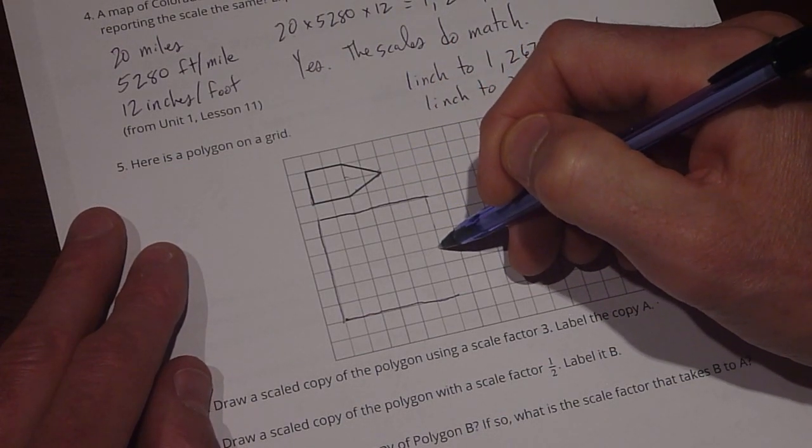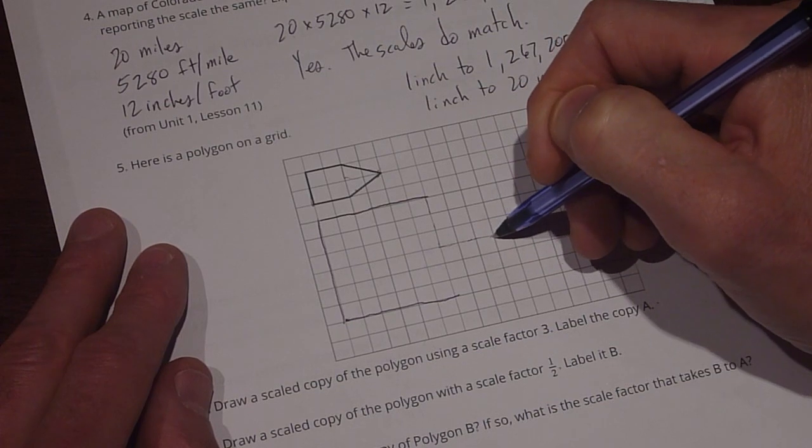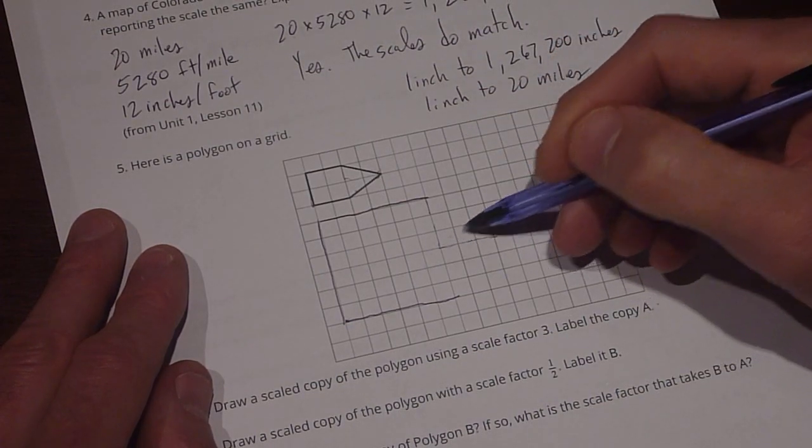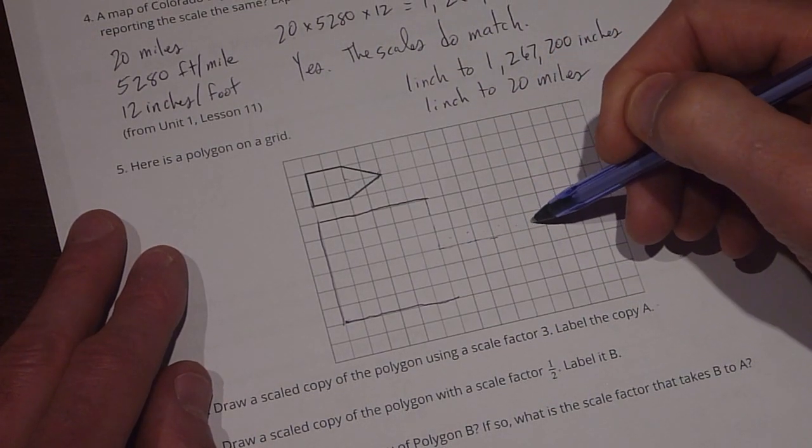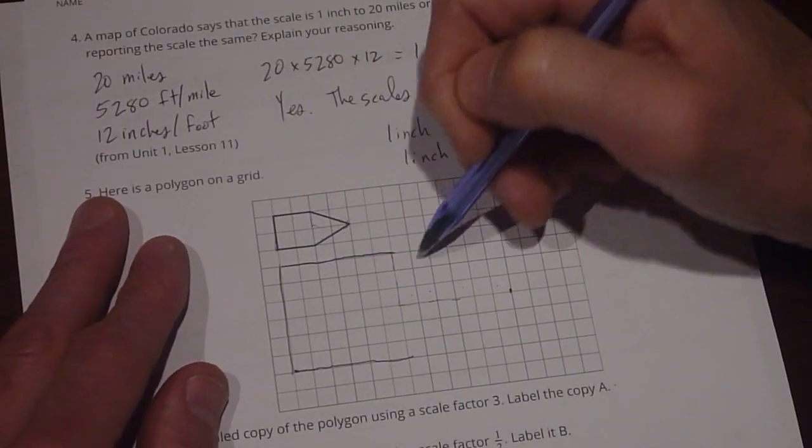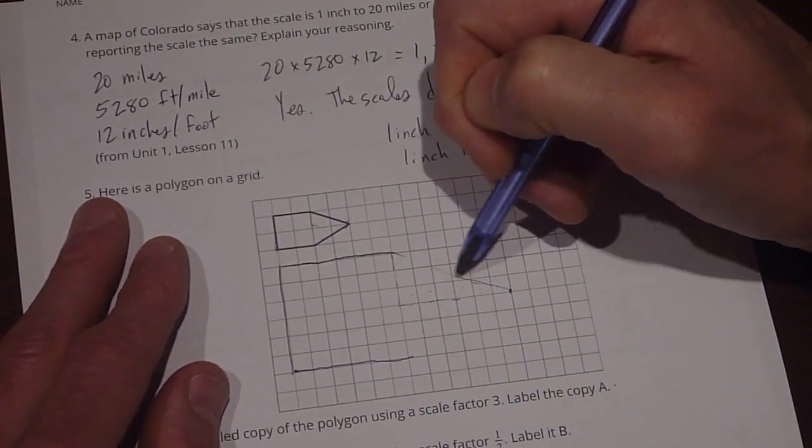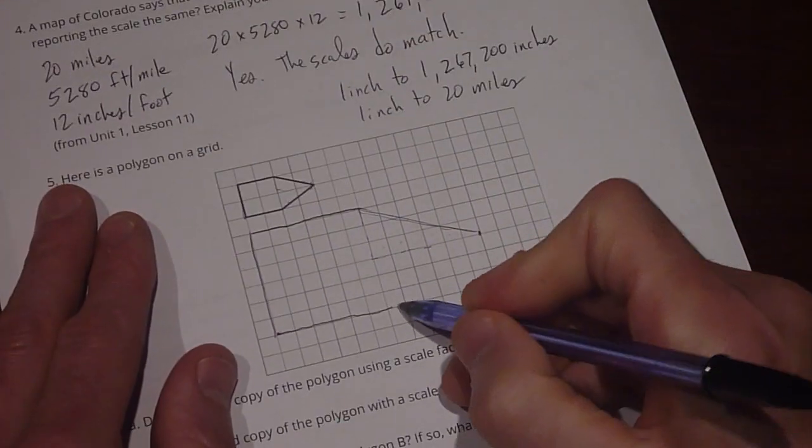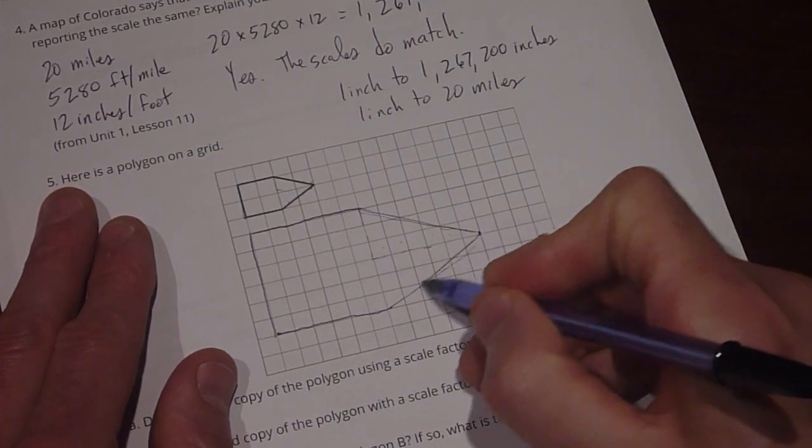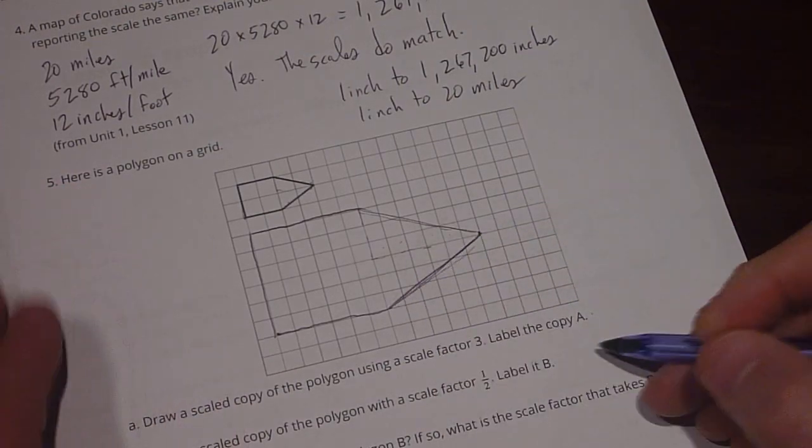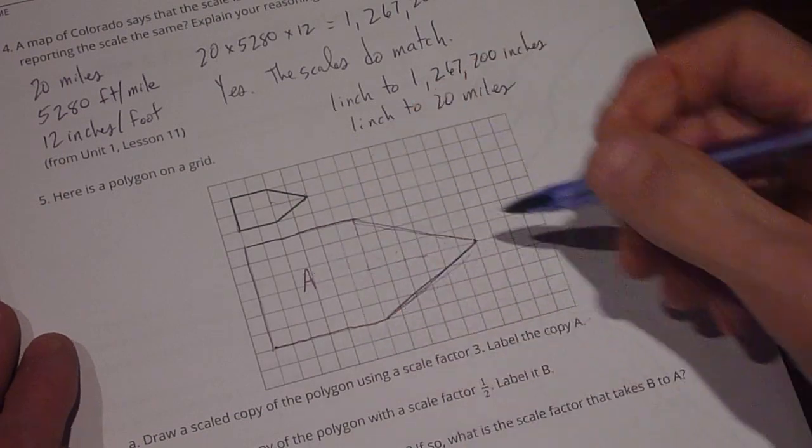Now if I go down 1 and over 2 that has to be multiplied by 3. So I go down 1, 2, 3 and over 2, 4, 5, 6 units. So right there. So then this is going to come to here. And then this one matches up right there. So this is A. We're calling that A.